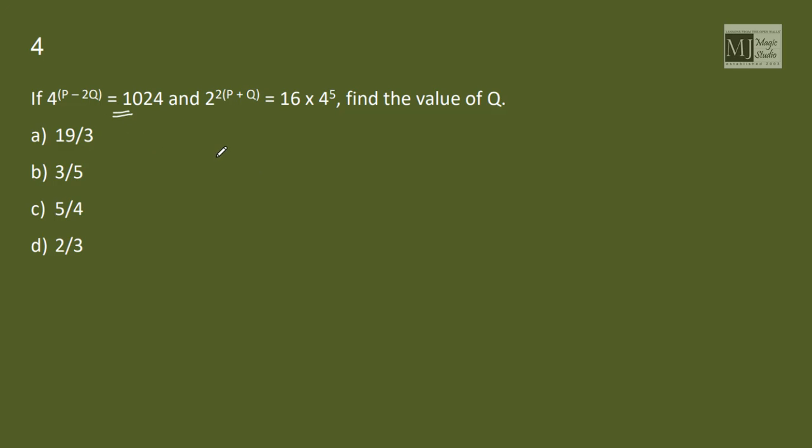4 to the power P minus 2Q is 1024, that is 2 to the power 10. So I can write this as 2 to the power 2 into P minus 2Q is 2 to the power 10. So I have 2P minus 4Q is 10. First equation. And the second one is 2 to the power 2 into P plus Q equals 16, that is 2 to the power 4 into 4 to the power 5 that is 2 to the power 10. So this would be 2 to the power 14. So I can write 2P plus 2Q is 14.